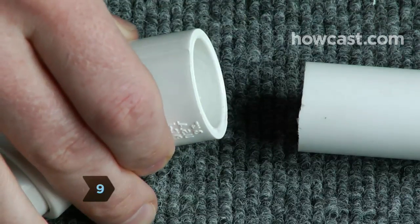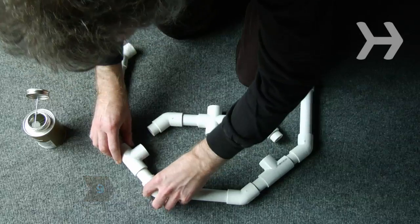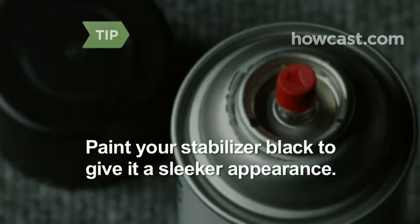Step 9. Seal all the connections on your stabilizer by brushing on PVC cement and let dry. Spray-paint your stabilizer black to make it look sleeker.